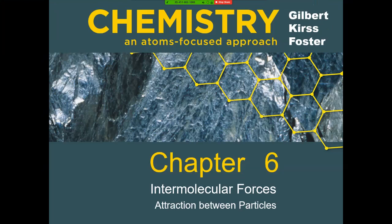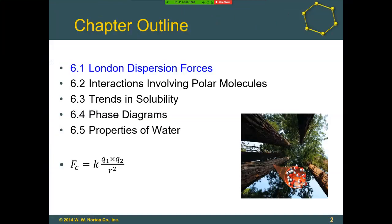I want to remind you that what I said was probably the most important equation from all of physics, which is the equation down here at the bottom for the Coulombic force. This is the attractive or repulsive force between two charged objects, and it exists for everything. If we've got ionic compounds, the ions have a full permanent charge that's always there.